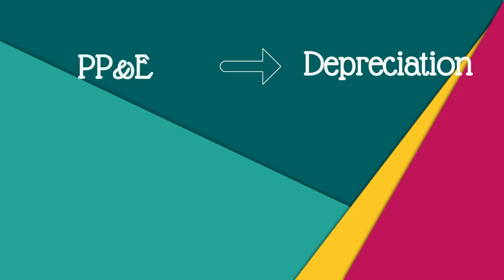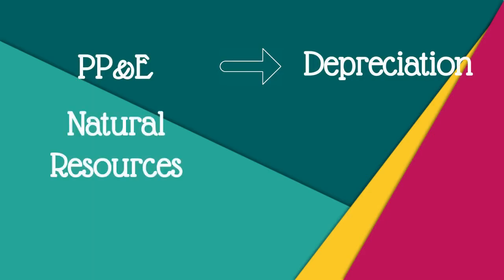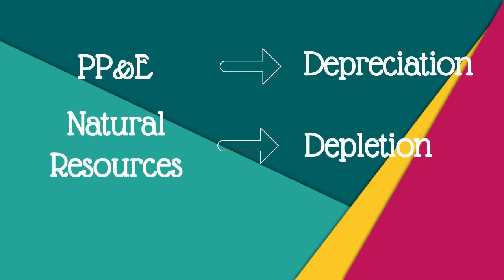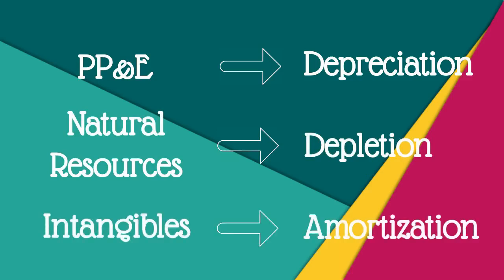That doesn't mean other long-lived assets do not allocate their costs over time. Natural resources are depleted; intangible assets are amortized. All long-lived assets go through the same process of cost allocation, but each type calls it something a little bit different.